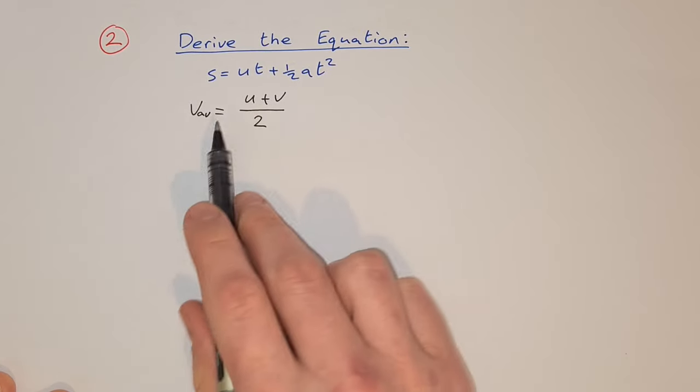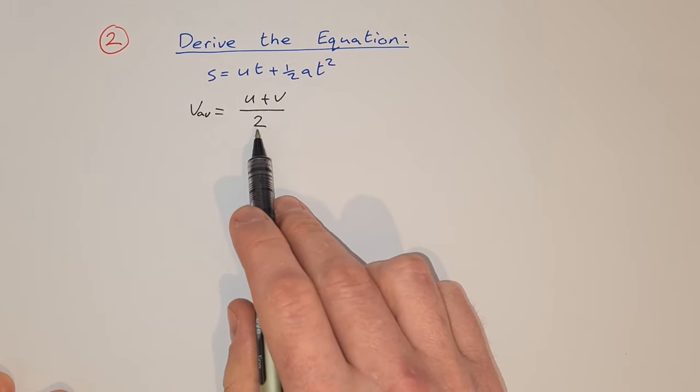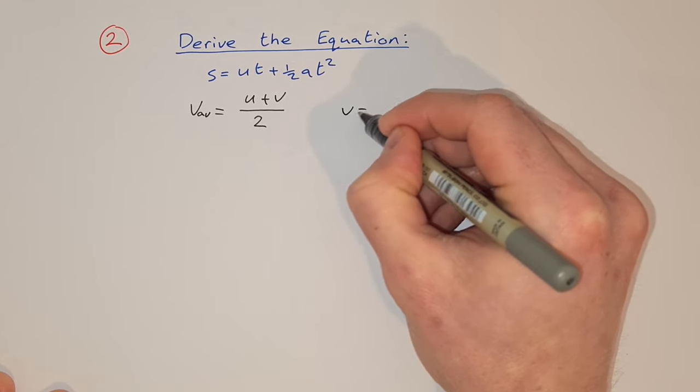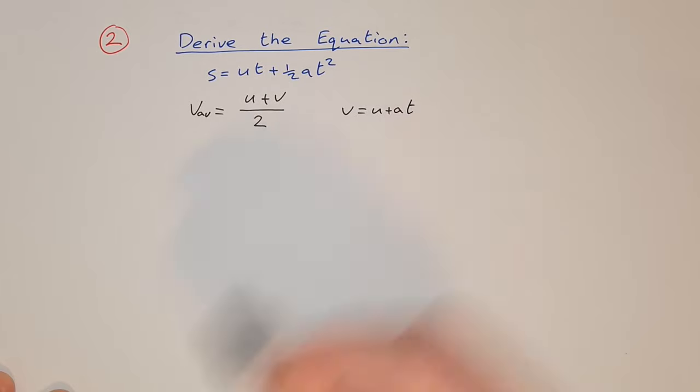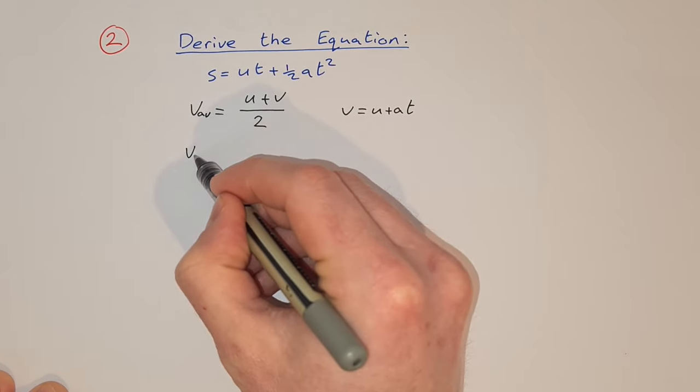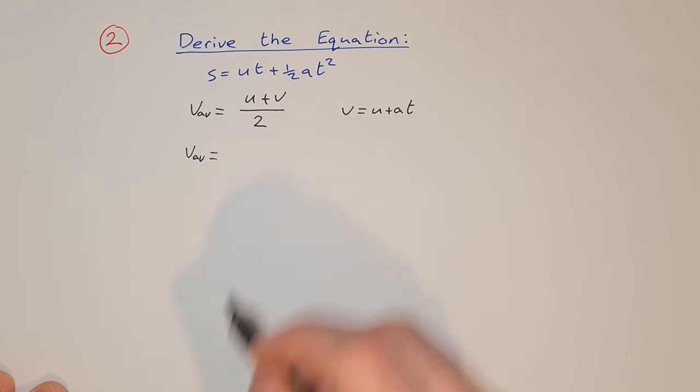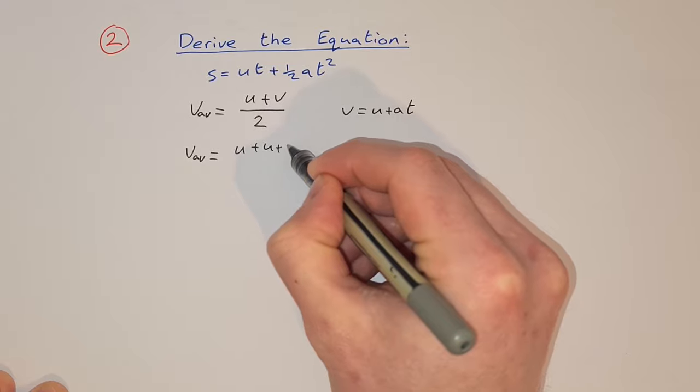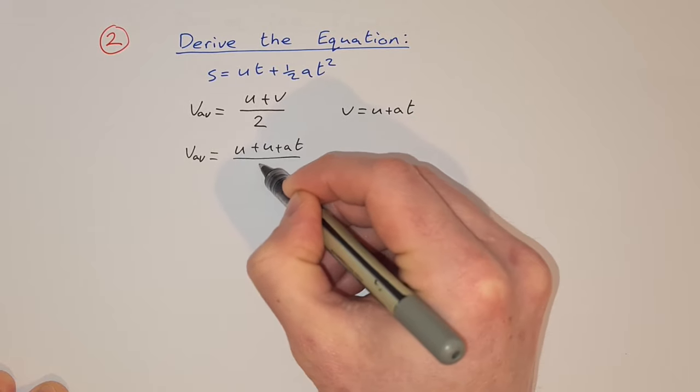So v average equals u plus v over 2. But we know that v equals u plus at from equation 1. So we can substitute that in and say that v average is now equal to u plus u plus at, all over 2.